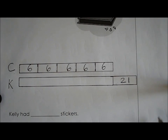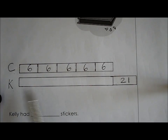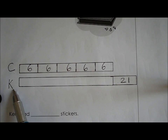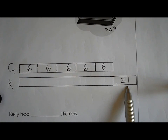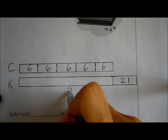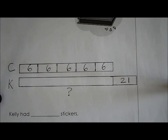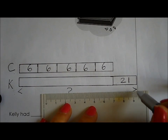Let me check: Celine had 21 fewer stickers than Kelly, so Kelly had 21 stickers more than Celine — yes. I want to find how many stickers Kelly had, so I put a question mark for Kelly and draw an arrow to indicate the total.